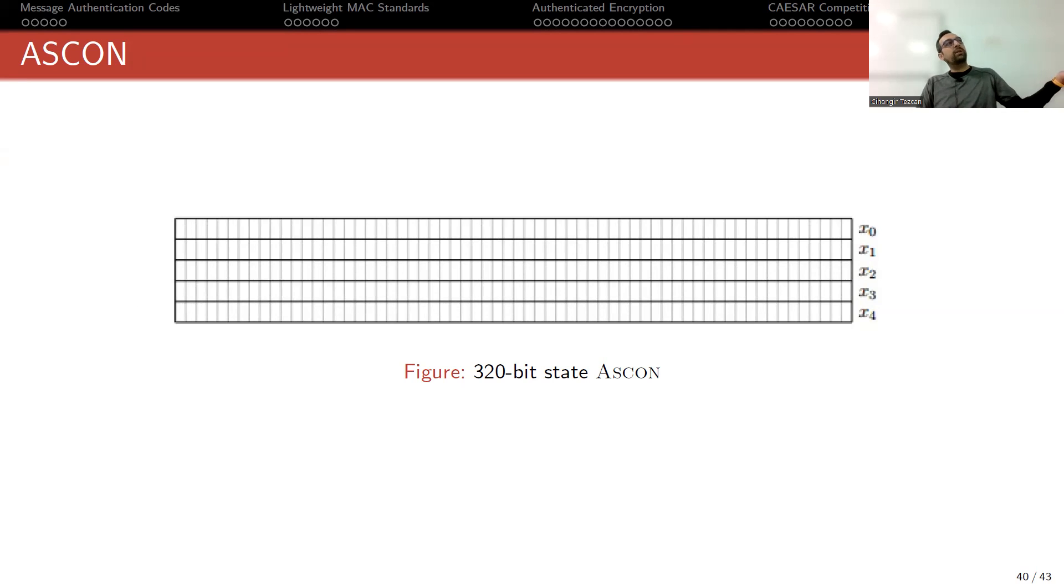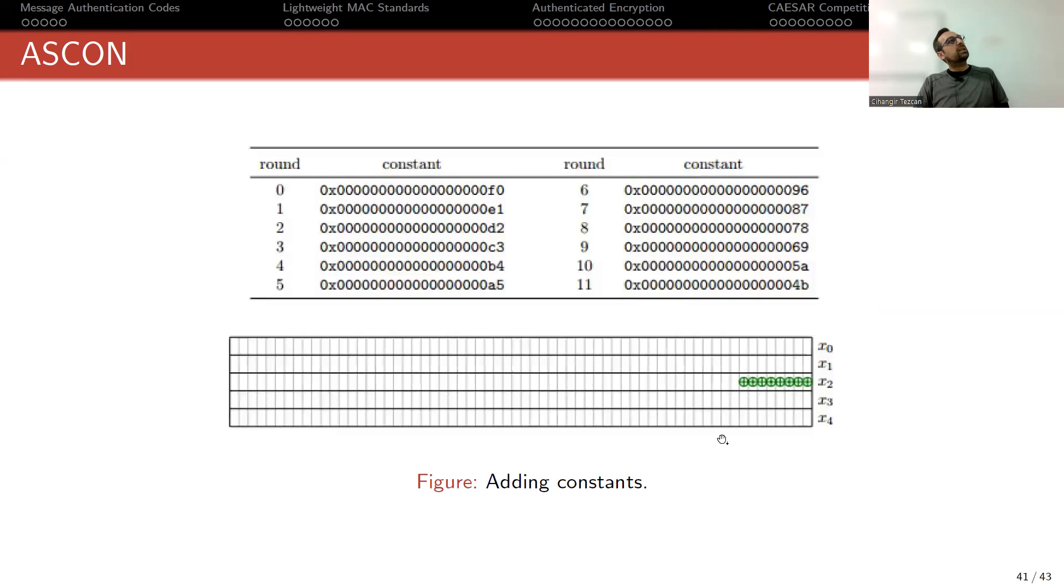So recall that initially I put IV here at the top as 64 bits, then put the secret key to this row X1 and X2, then put the nonce X3 to X4. You fill it, then you perform the permutation operation P many times. So let's see what that P does to this internal state. It starts with XORing with the round constant here, and round constants are provided here depending on your rounds.